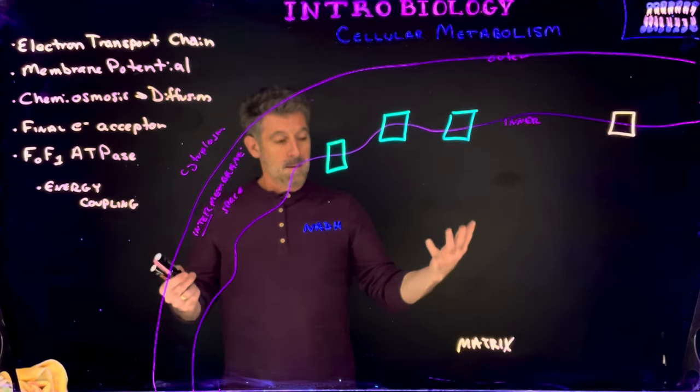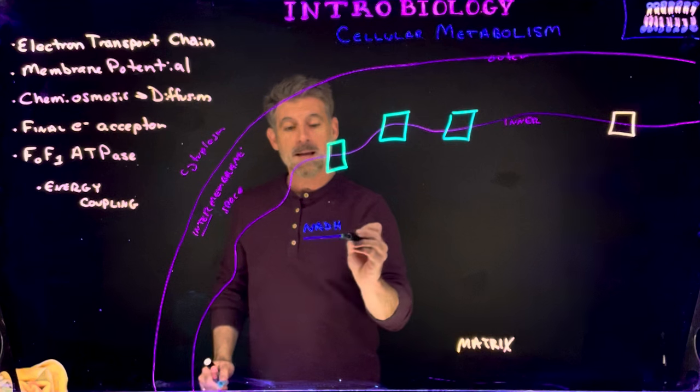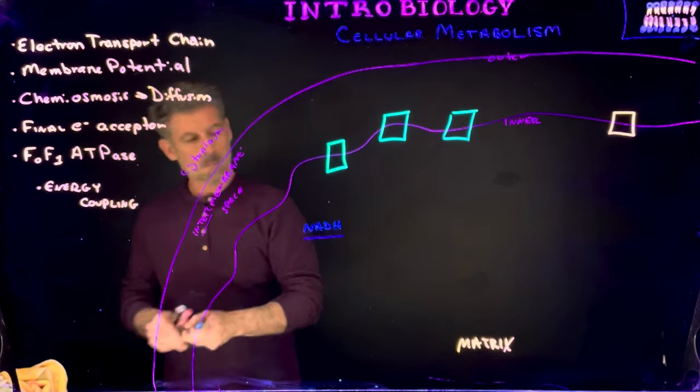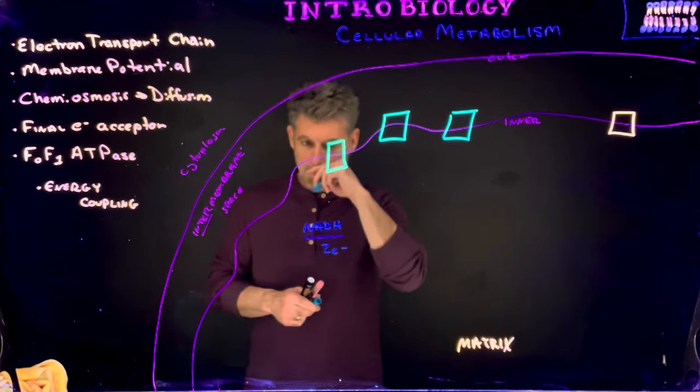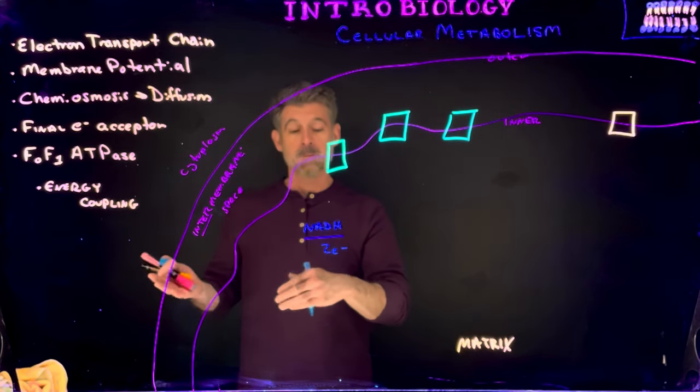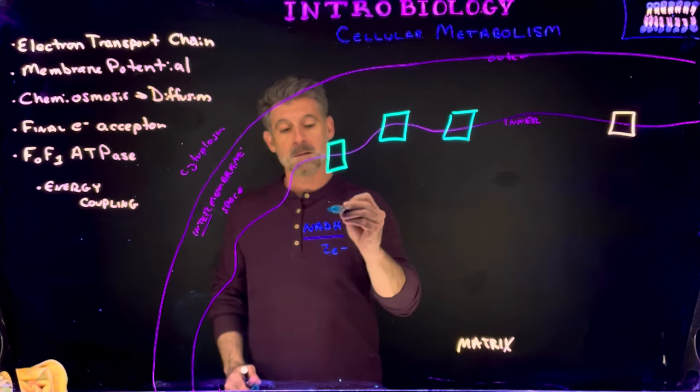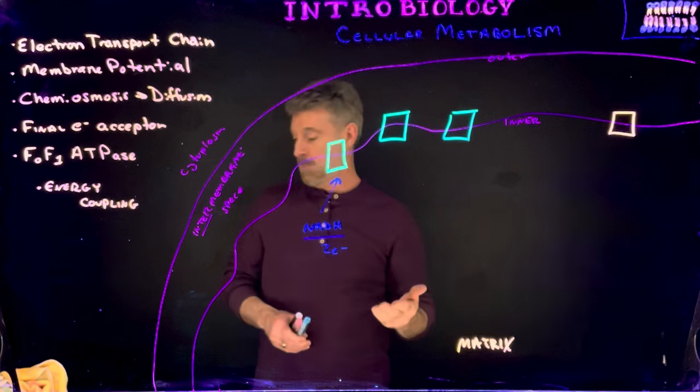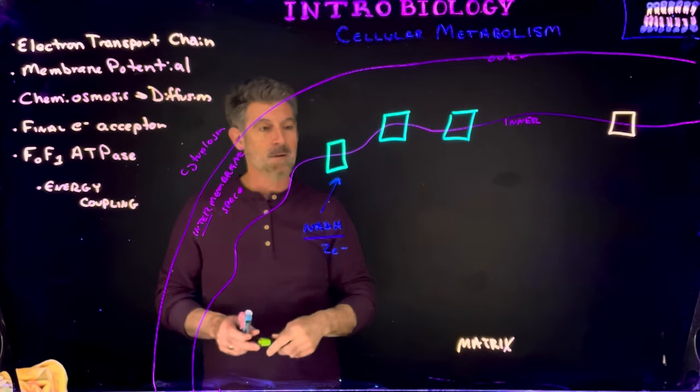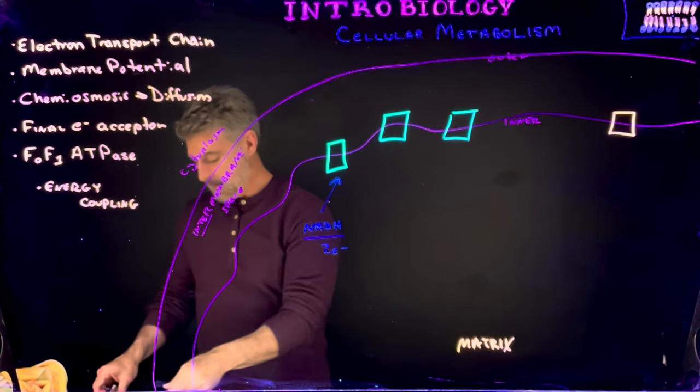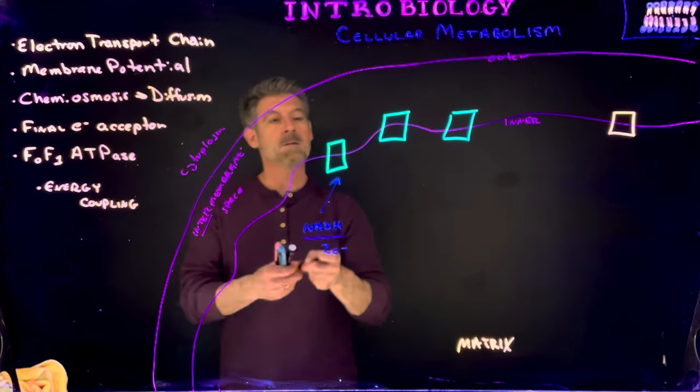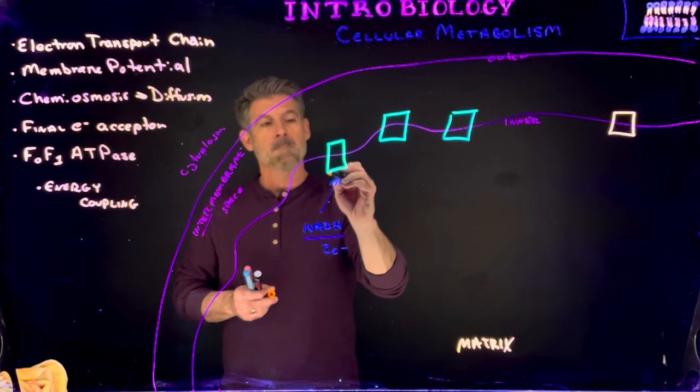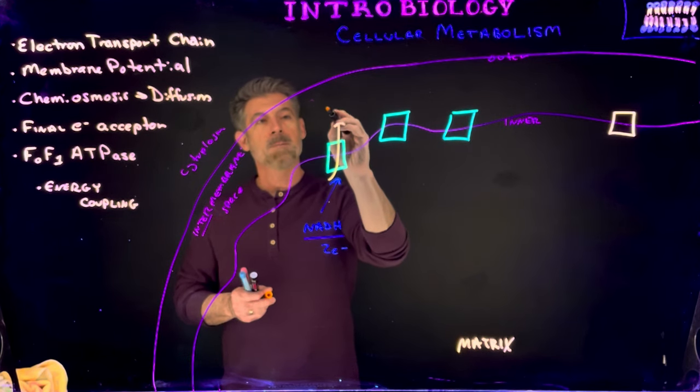So what happens in this process? The NADH carrying electrons—carrying two electrons that they received from glucose or some other part of the process—they're going to give those electrons to a membrane protein. So this is a protein embedded in the membrane of the mitochondria. And then what's going to happen is it's going to use the energy from these electrons to pump protons.